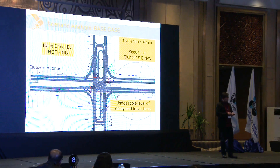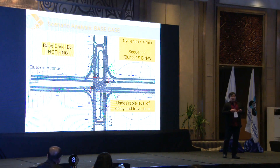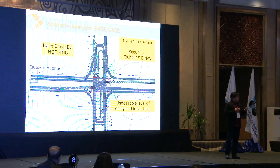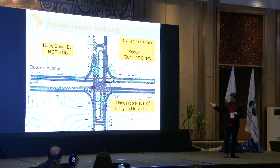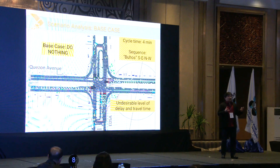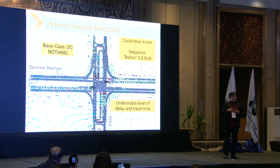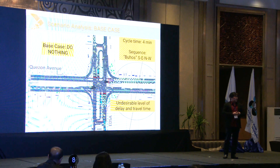Our objective is to experiment and test which alternative solution will best alleviate congestion. This is a sample scenario analysis for our sample intersection. Starting with the base case or the do-nothing scenario, we observe that traffic is being managed by a traffic signal, wherein the go signal is rotated with a specific sequence, starting from vehicles from the south approach, then the east, then the north, and then the west approach.